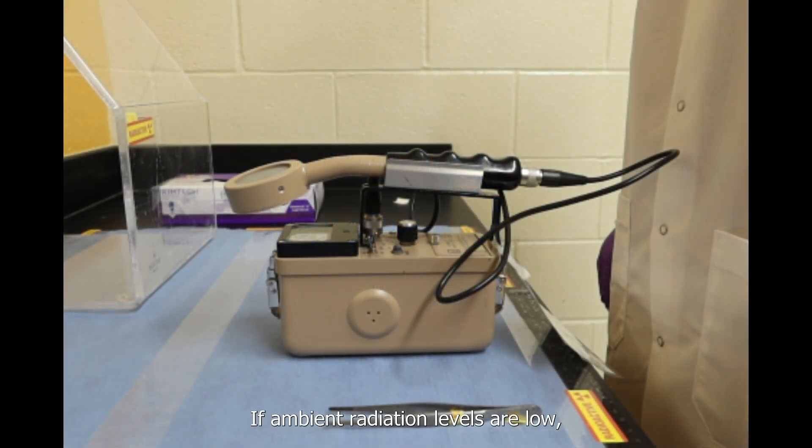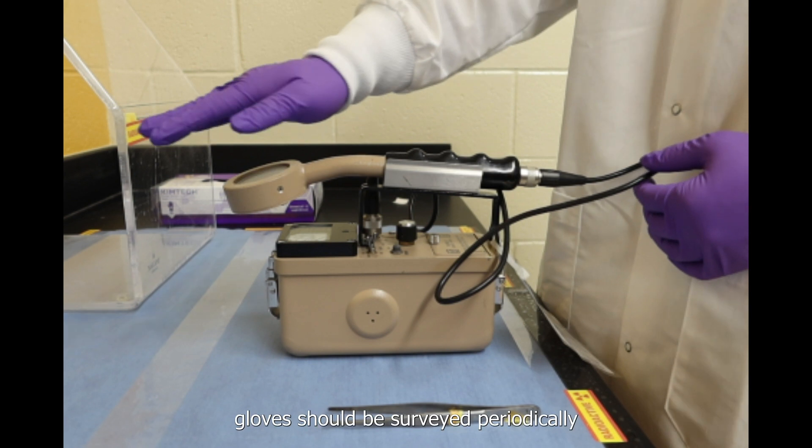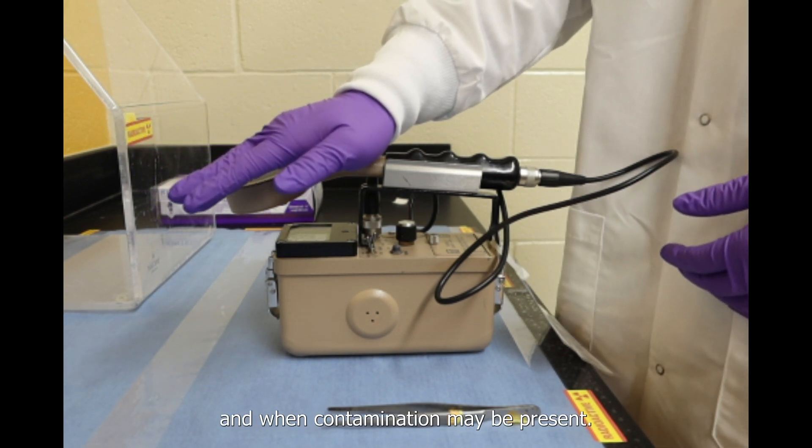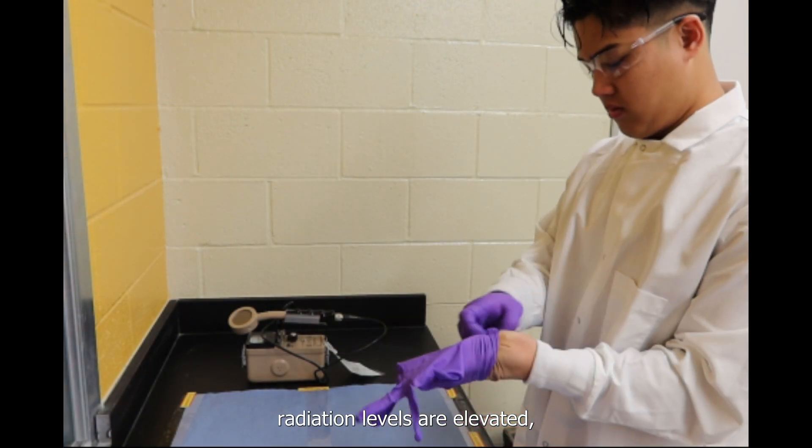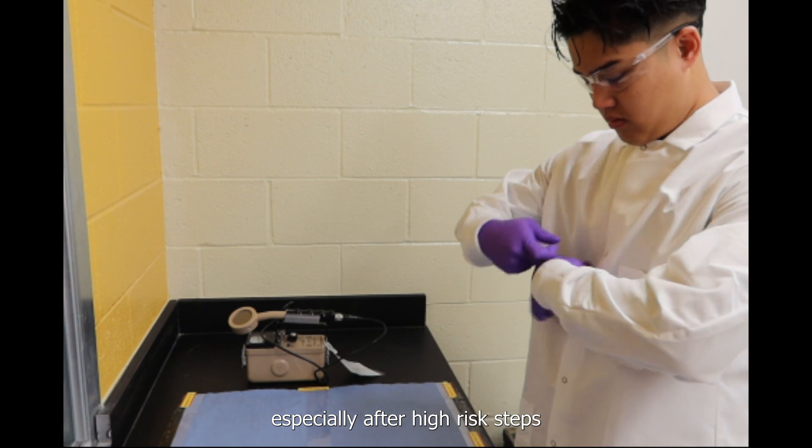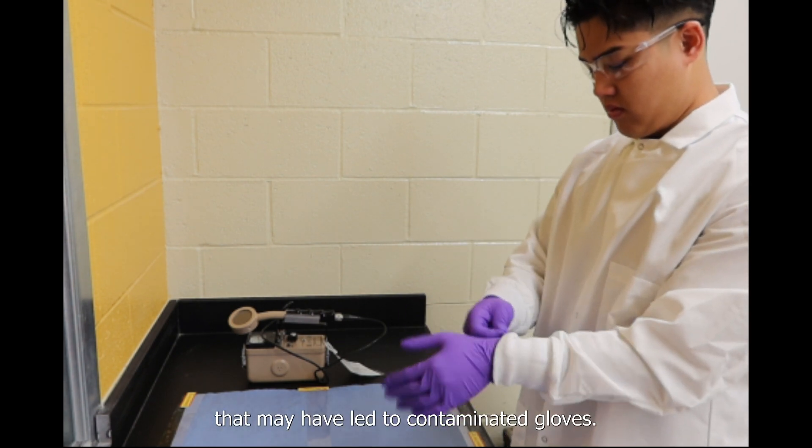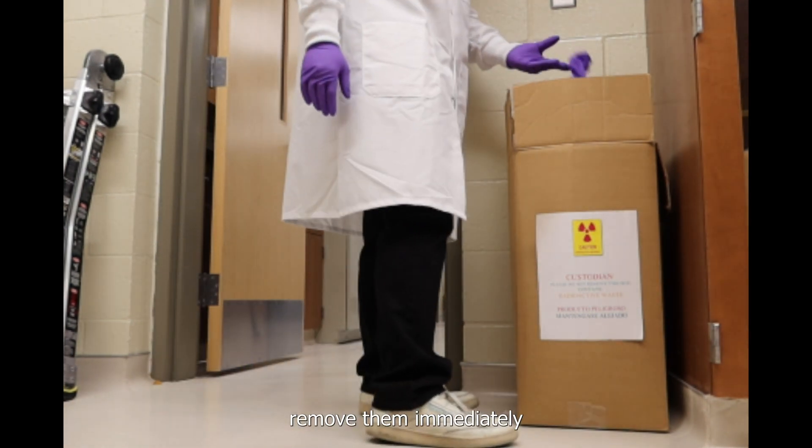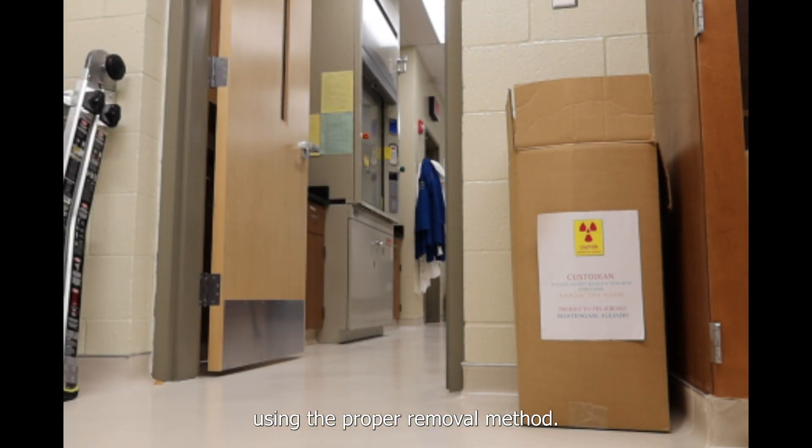If ambient radiation levels are low, gloves should be surveyed periodically and when contamination may be present. If ambient radiation levels are elevated, change out of gloves frequently, especially after high-risk steps that may have led to contaminated gloves. If gloves are found to be contaminated, remove them immediately using the proper removal method.